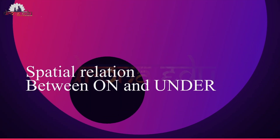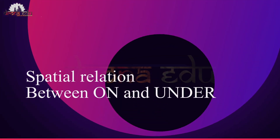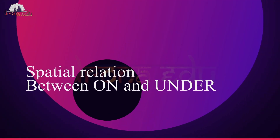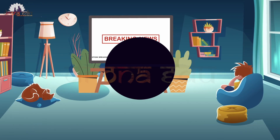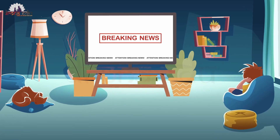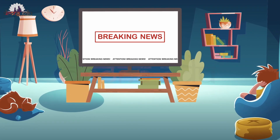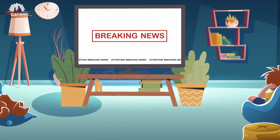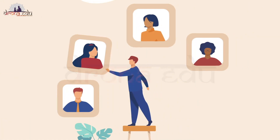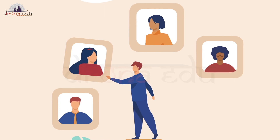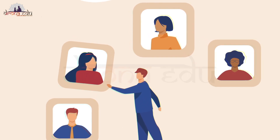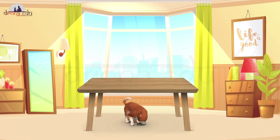Likewise, you can see the spatial relation between top and bottom. Similarly, let's see the spatial relation between on and under. In the first picture, you can see that the television is on the table, and in the second picture you can see that the photograph is on the wall.